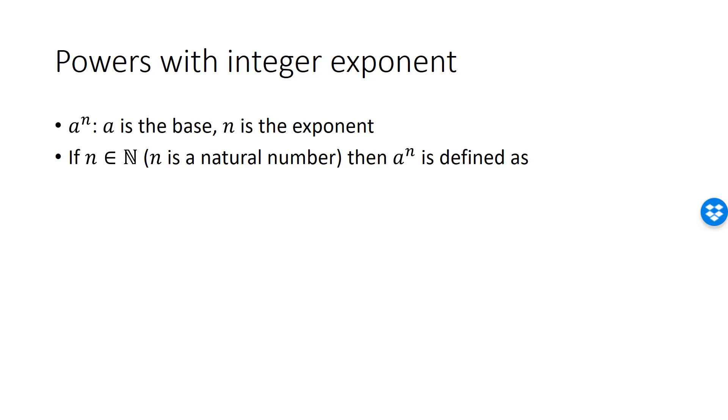If n is a natural number then exponentiation has a natural definition. a to the n is defined as the repeated multiplication of the base a n times. Thus, a to the power of 1 is just a, a to the power of 2 is a times a, and so on.